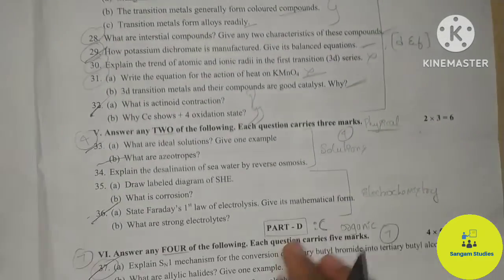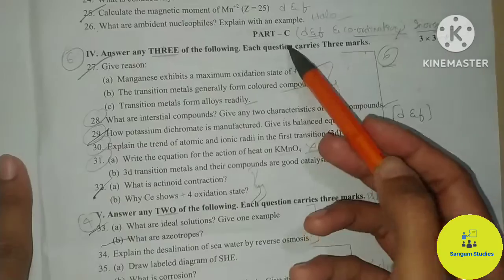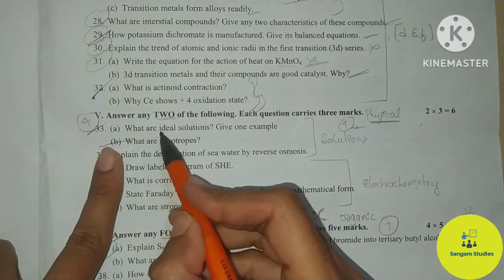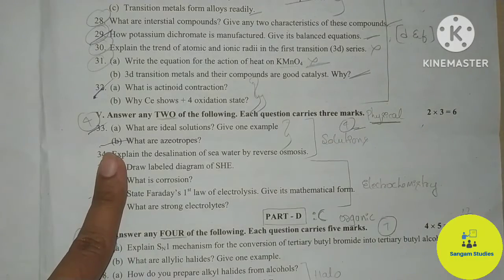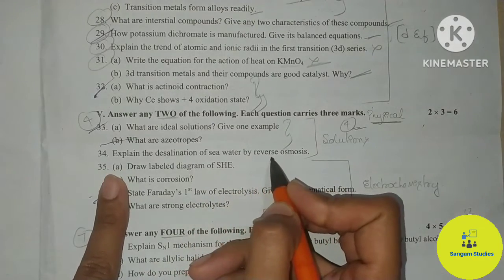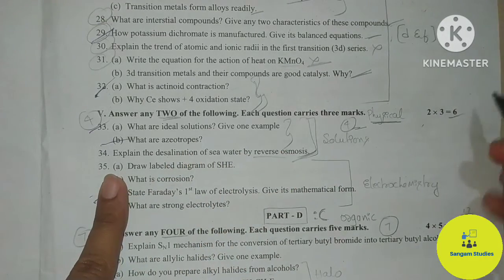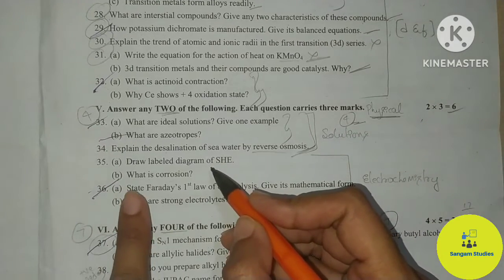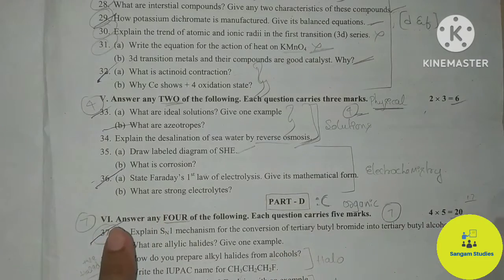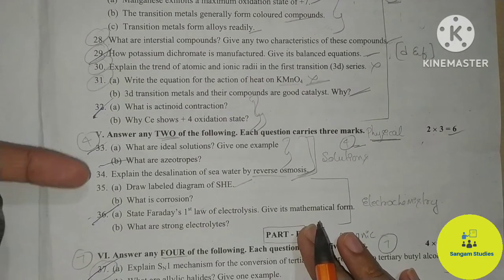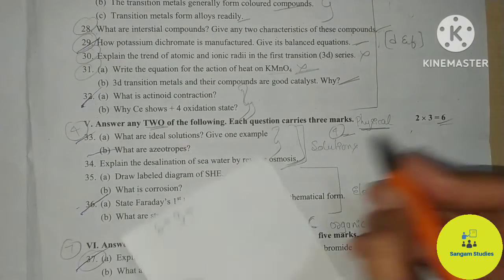Next part is the 5th main section, if you answer 4 questions at 3 marks each, that is 2 × 3 = 6 marks. Then Part C, 5th main, is completely dedicated to physical chemistry. First question: Are water ideal solutions? Give an example. What are azeotropes? — Direct question, all repeated questions from the solutions chapter. Desalination of sea water by reverse osmosis — also a direct question. Draw the labeled diagram of SHE — important. What is corrosion? — important question. State Faraday's first law of electrolysis, give its mathematical form. What are strong electrolytes? You will score 6 marks from this section.